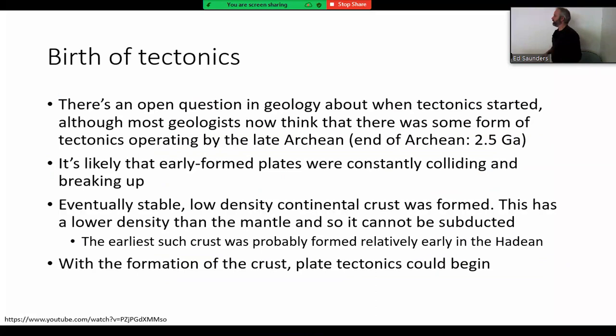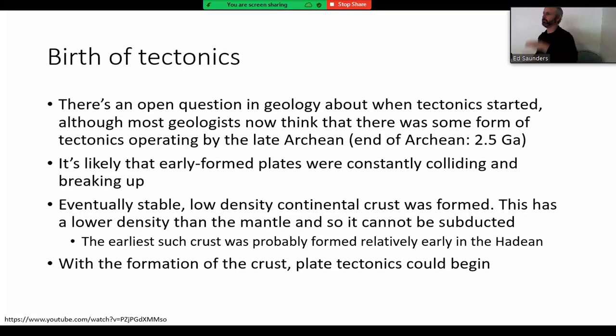At some point in Earth's history, we started forming stable, low-density continental crust. Continental crust is quite different to oceanic crust. Oceanic crust is made mostly out of basalt, which is quite a dense material. In fact, when you cool basalt down it's denser than the mantle it's sitting on top of, so it's gravitationally unstable. If you've got something more dense sitting on something less dense, you're going to end up overturning that — and that's what happens during subduction, that's the initiation of subduction.